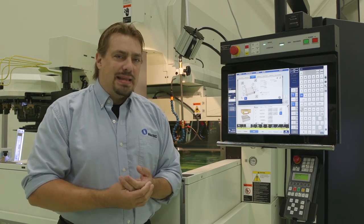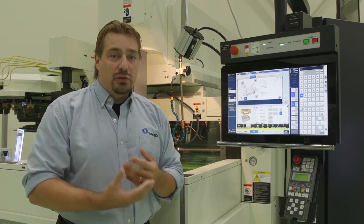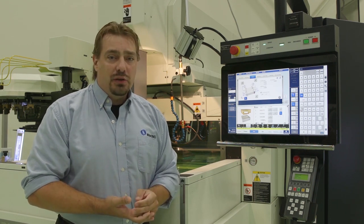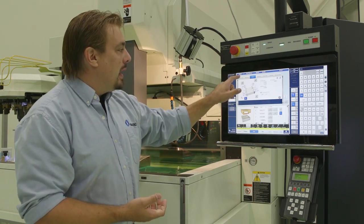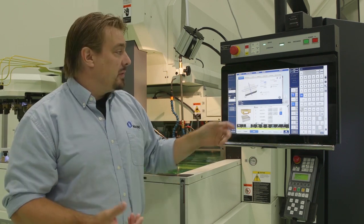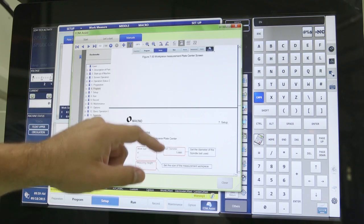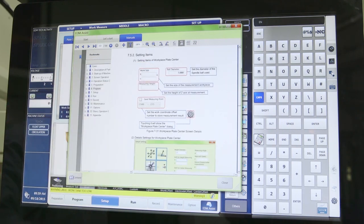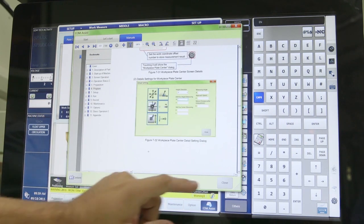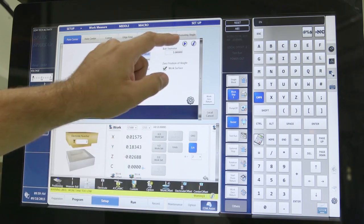So what we've done is we've provided them a lot of embedded support that's directly on the machine control. For example, if I have a question about finding the center of a workpiece, I have a hot link that brings me directly to the manual, the onboard manuals, brings me directly to that section. So here's the information I need right at my fingertips.